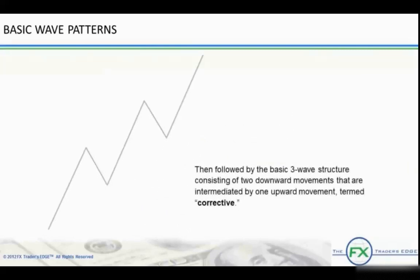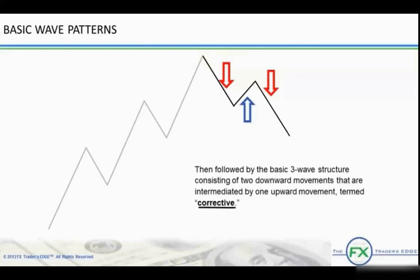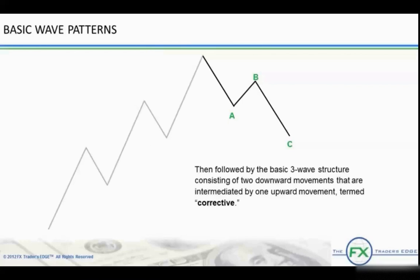Then it is followed by the basic three-wave structure consisting of two downward movements that is intermediated by one upward movement, termed corrective. The correction is lettered A-B-C. A five-wave advance or decline is followed by a three-wave move in the opposite direction. The basic rhythm is five waves corrected by three waves, no matter what time frame is being looked at. We call the A-B-C pattern the corrective sequence. The five-wave advance is the numbered phase and the three-wave correction is the lettered phase. This sequence remains constant no matter what degree of wave is being analyzed.